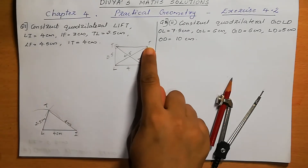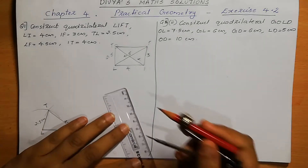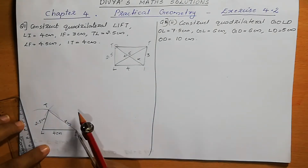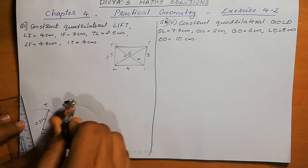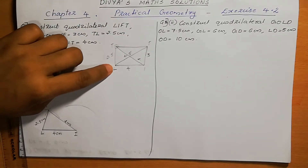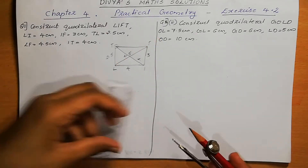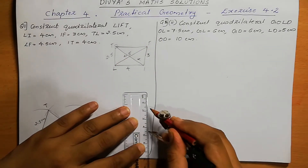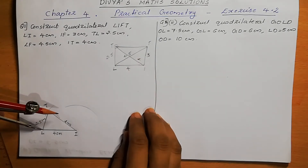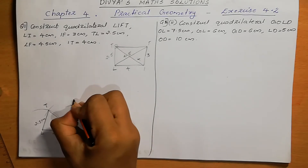Next, which one is missing? F is missing. I to F is 3 cm. So we can take 3 cm, and with I as center we can draw an arc. The next point of intersection: T to F is there but the measurement is not given, so we are not able to draw that. Next, L to F is the next point of intersection — LF = 4.5. So we can take 4.5 and cut the arc from L. This point of intersection is called F, so we can mark it as F.